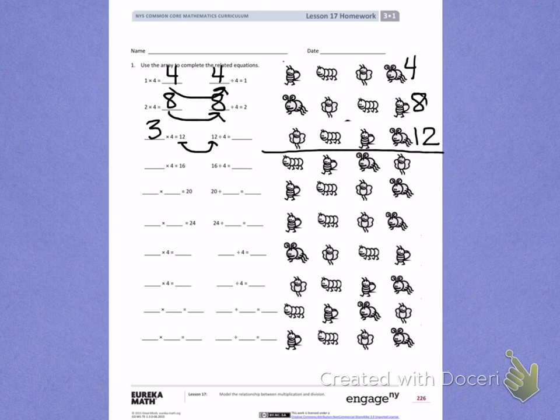12 has moved over to my division problem. We're dividing those 12 into equal groups of 4. When I see equal groups of 4, I have 3 equal groups of 4.